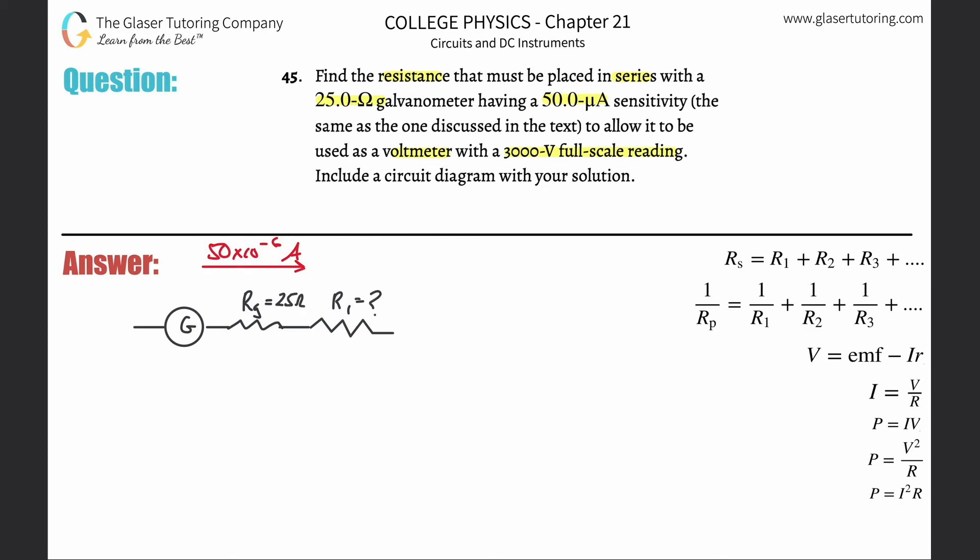They want to know this resistance that's going to be placed in series. We know that the full scale reading will read 3000 volts. So how do I now relate all these variables? Well, sounds like Ohm's law to me.